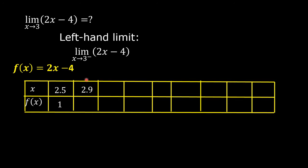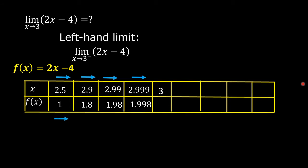Next, x equals 2.9: 2 times 2.9 minus 4 is equal to 1.8. Then x equals 2.99: 2 times 2.99 minus 4 is equal to 1.98. Then x equals 2.999: 2 times 2.999 minus 4 is equal to 1.998, which gets closer and closer to 2. So our estimate is that the limit of the quantity 2x minus 4 as x approaches 3 from the left is 2.